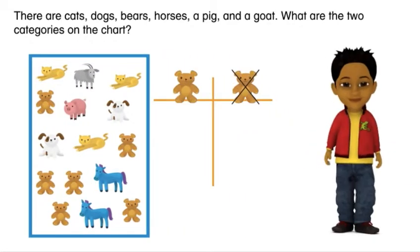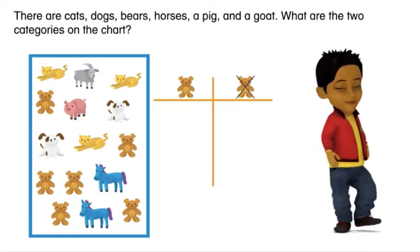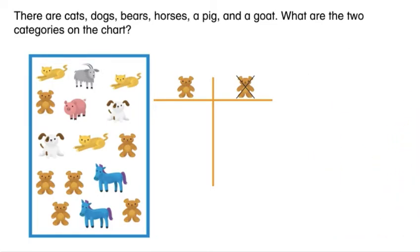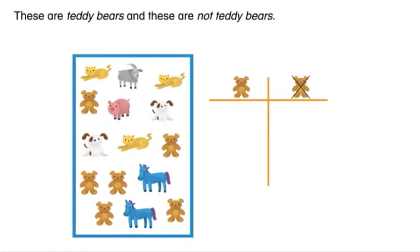What are the two categories on the chart? These are teddy bears and these are not teddy bears.